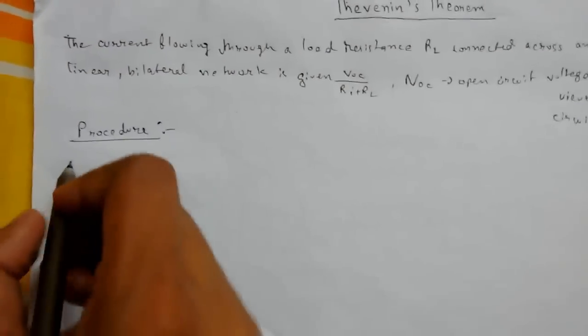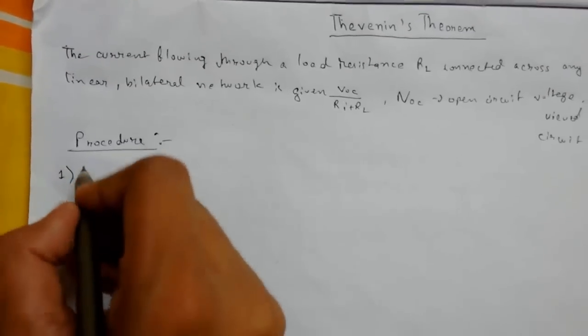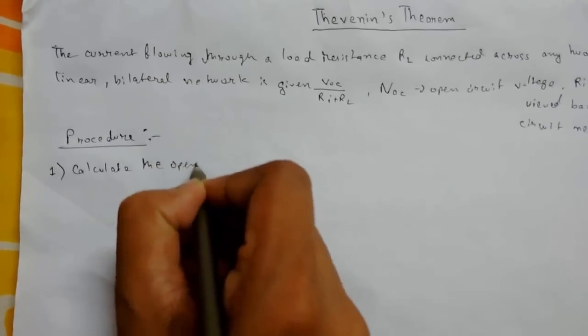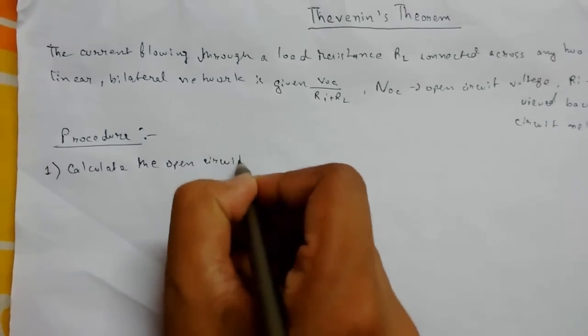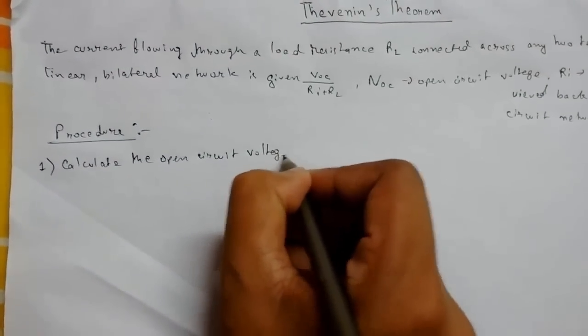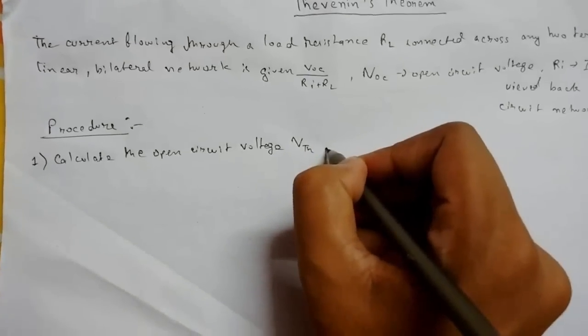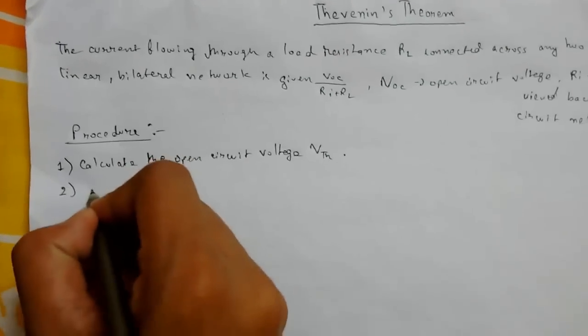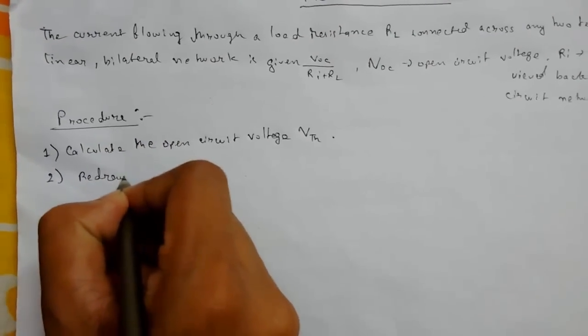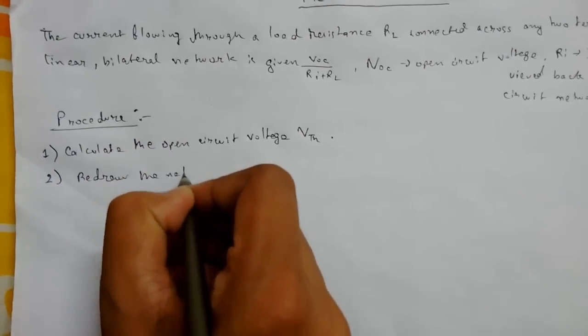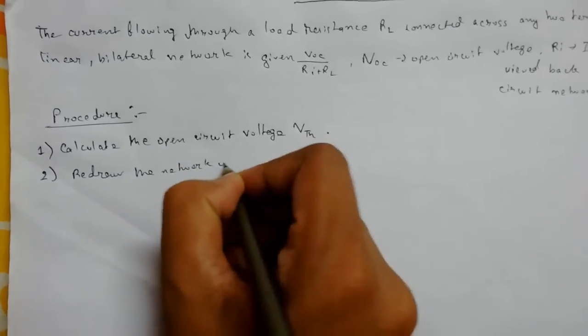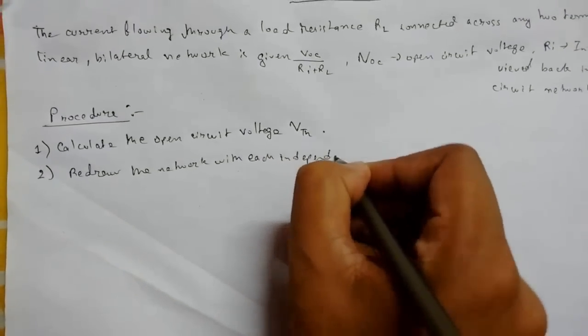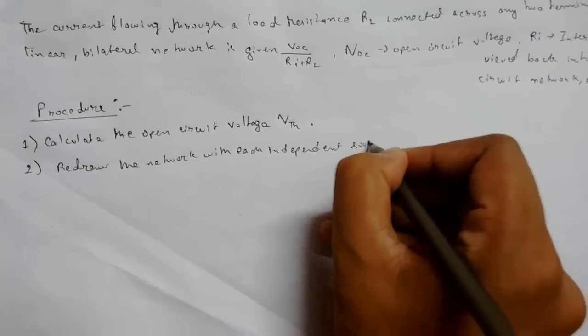Number one: Calculate the open circuit voltage, that is Vth, across the terminals. Number two: Redraw the network with each independent source replaced by its internal resistance.